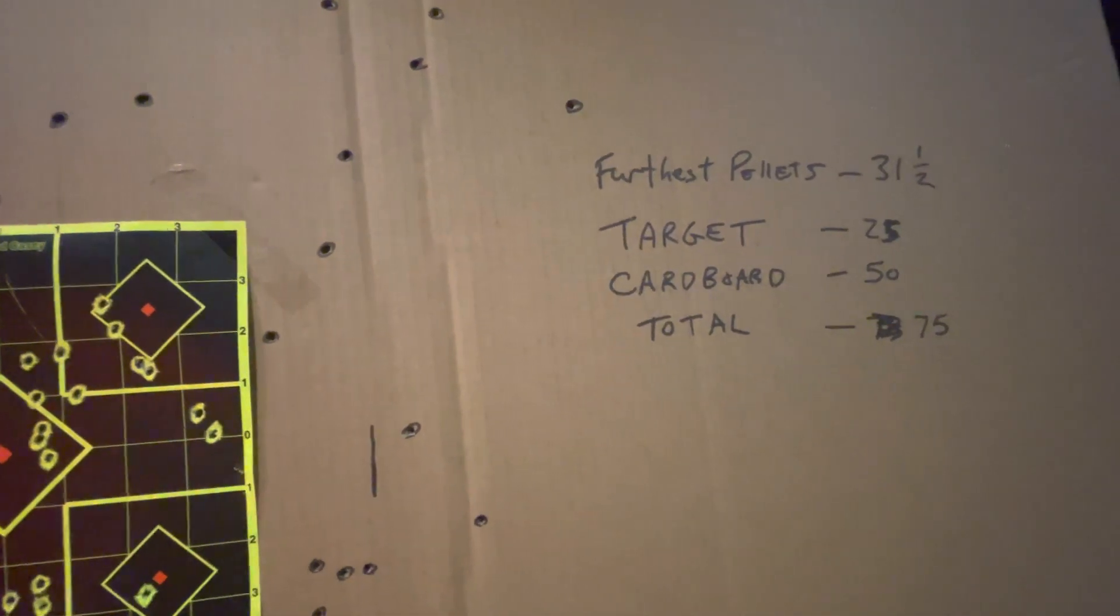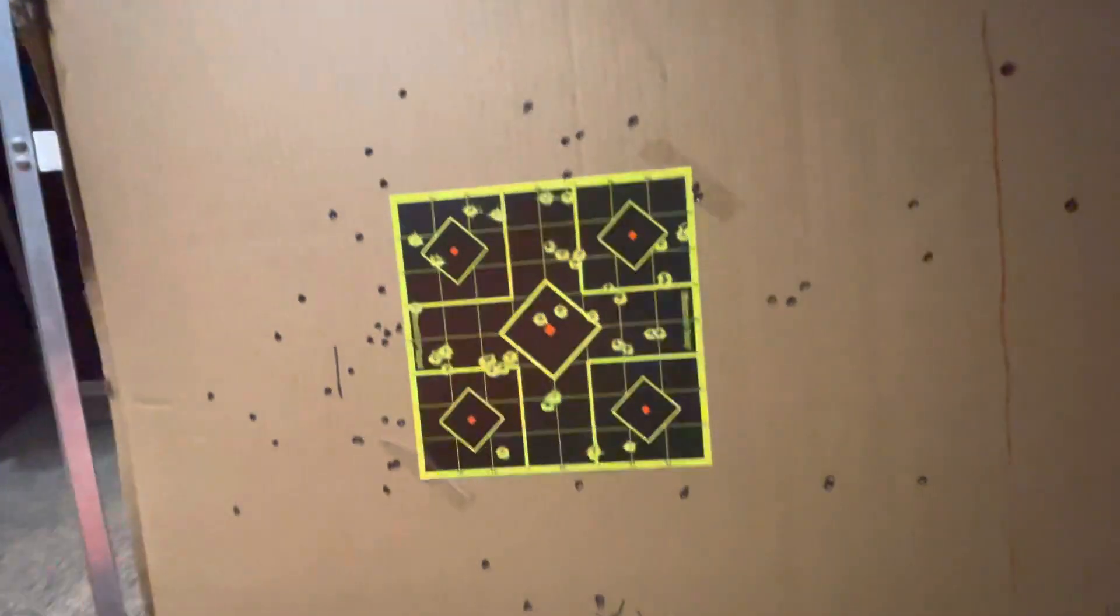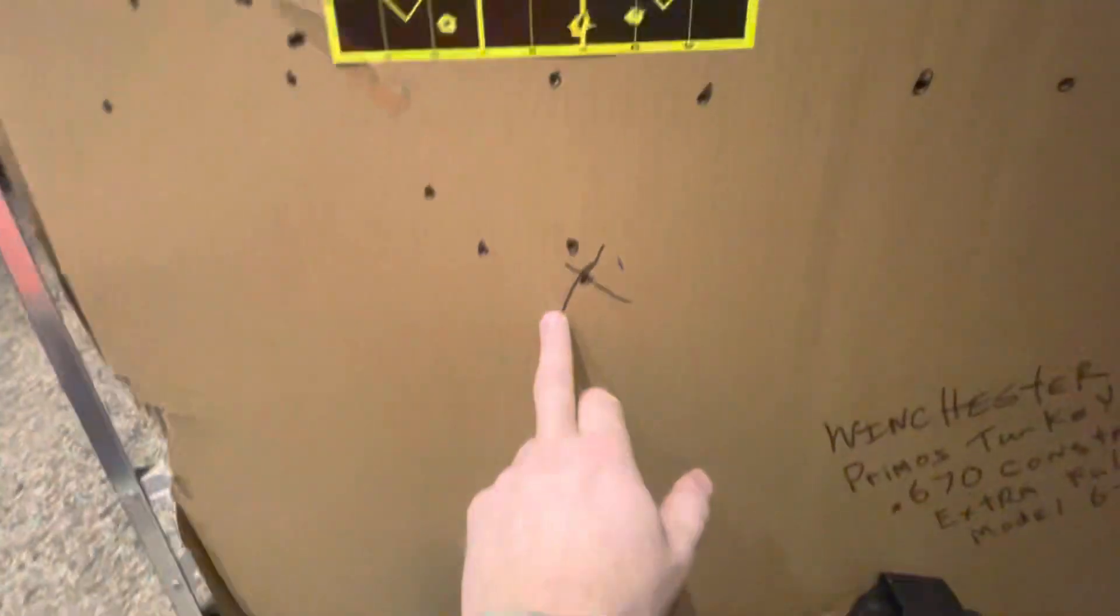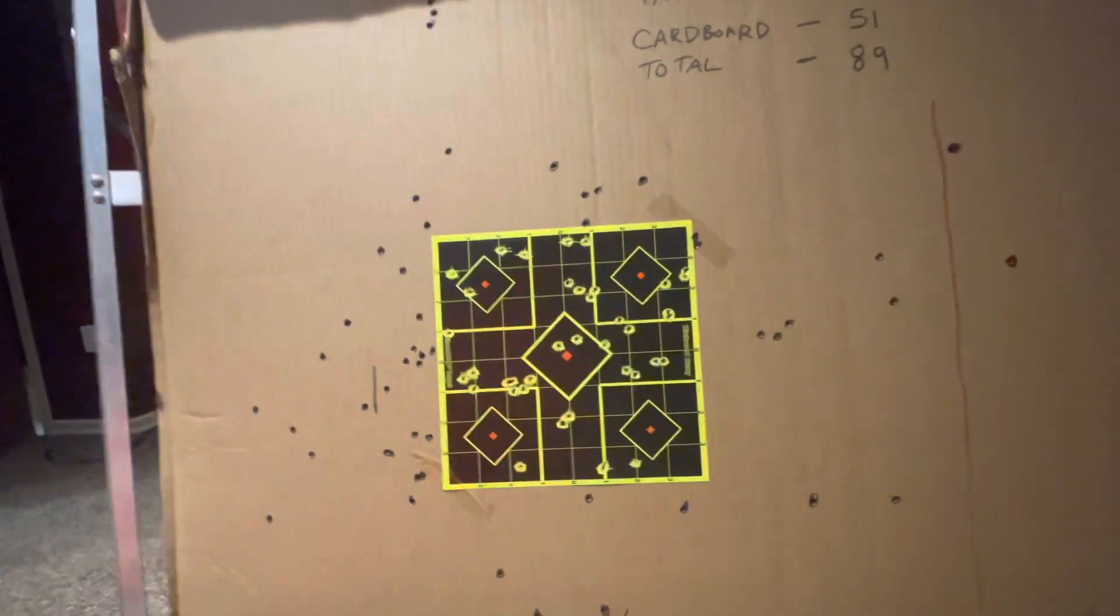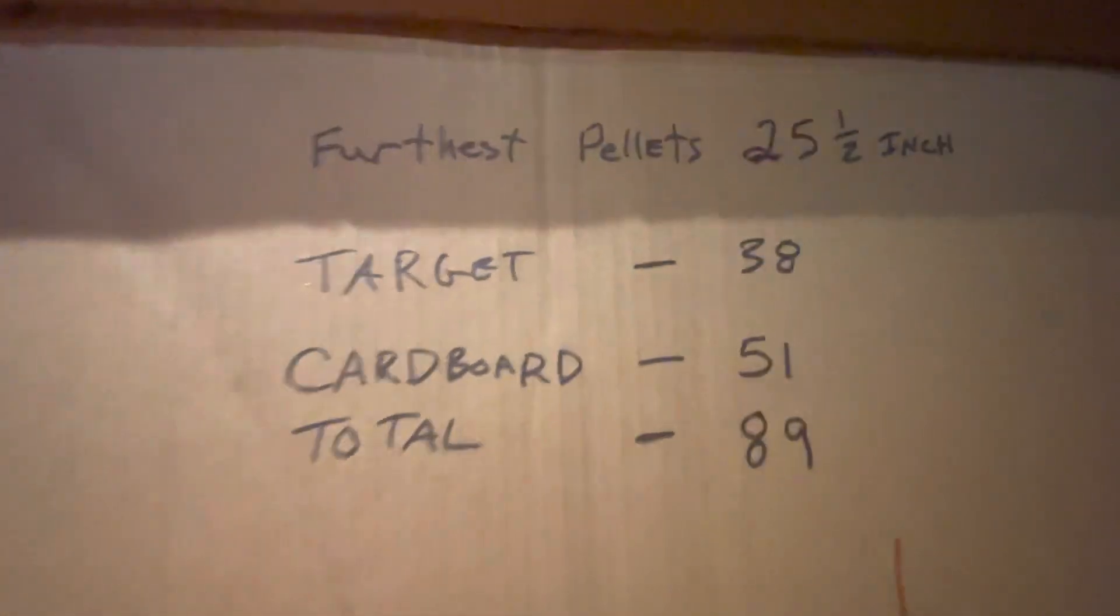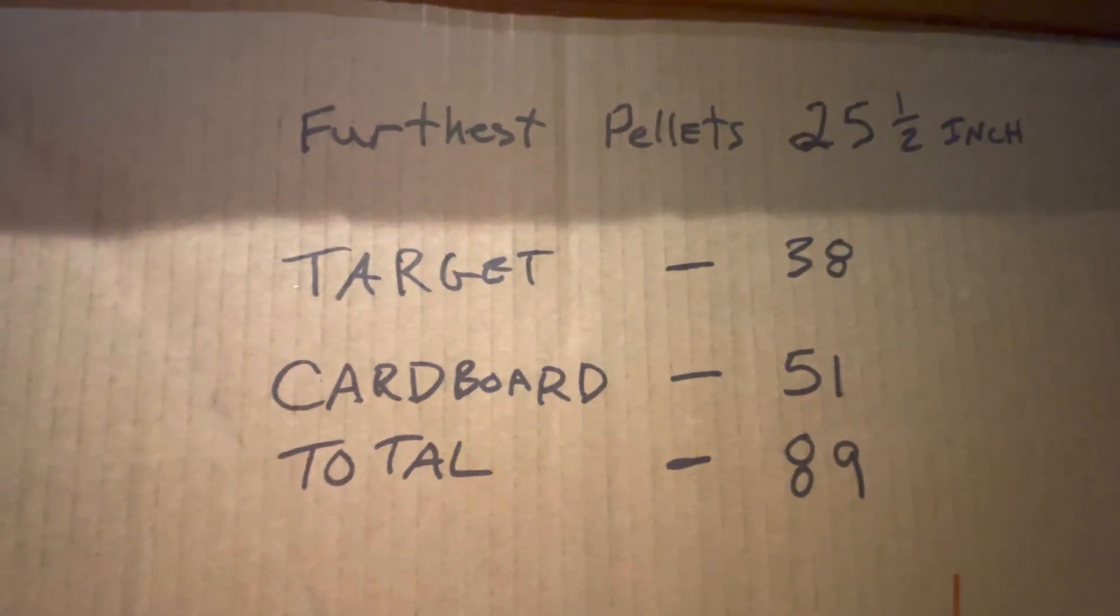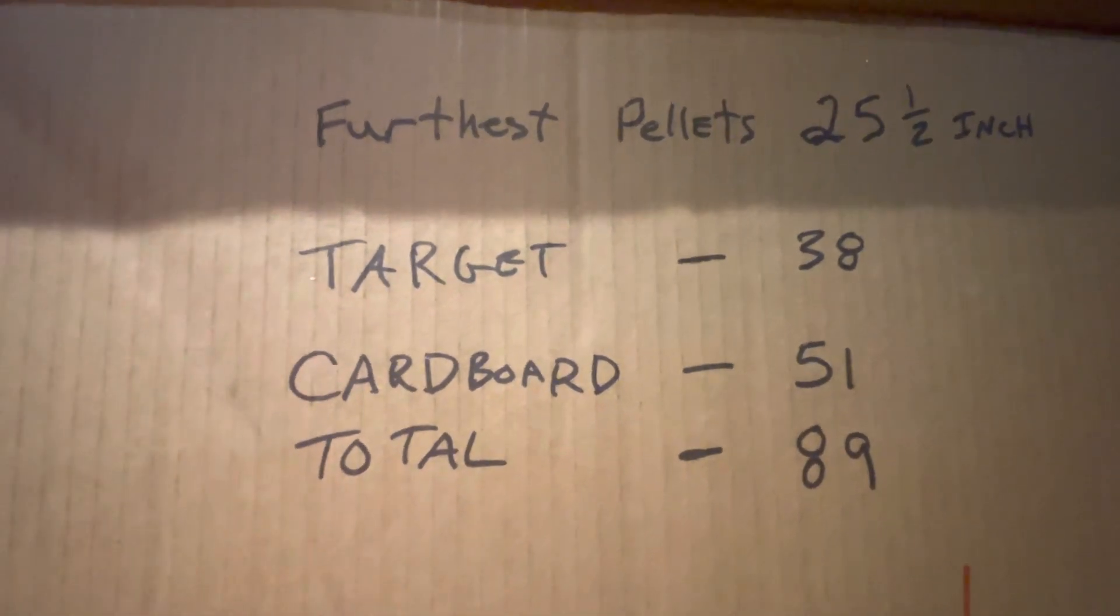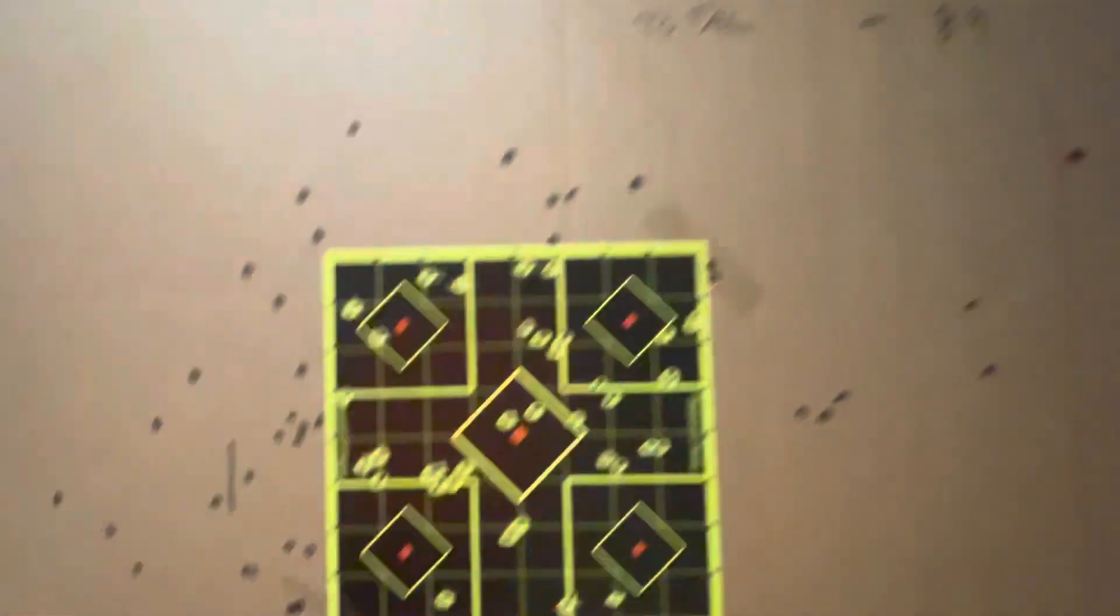When you look at the other target, it had quite a nice pattern. We had this one way up here that was the furthest up top and then our furthest down low. Still closer than the other one - the other one was 31½ inches, this one was 25½ inches for the furthest two BBs. We had 38 BBs versus 25 on target, 51 on cardboard versus 50, and a total of 89 compared to 75.